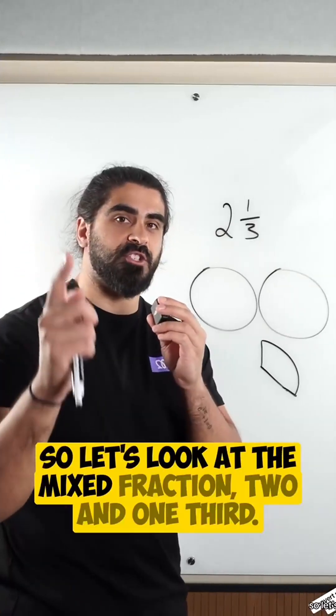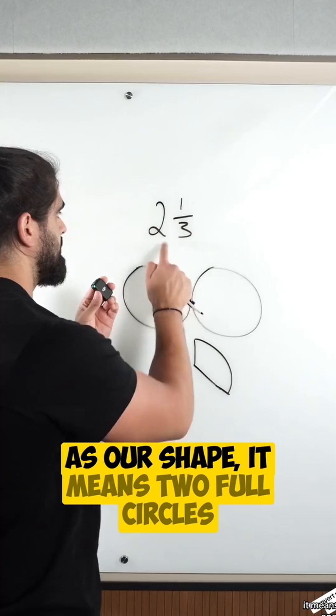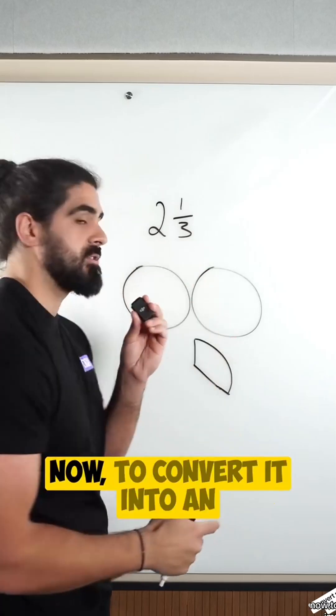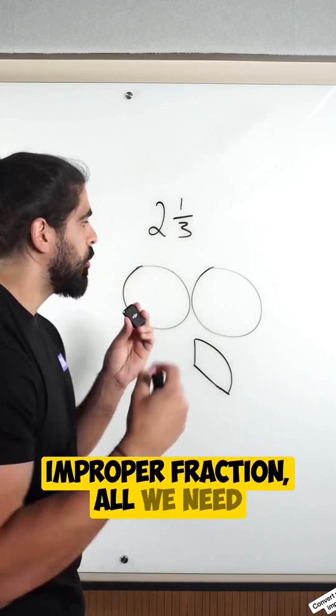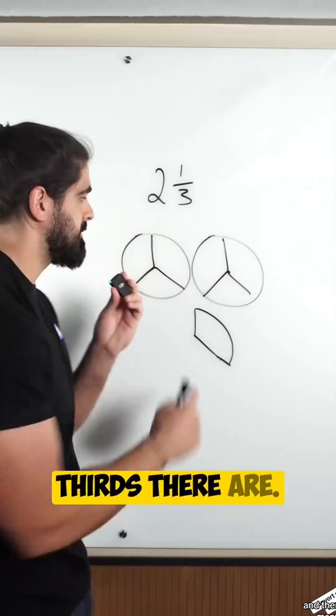So let's look at the mixed fraction 2 and 1 third. Now if we're looking at circles, for example, as our shape, it means 2 full circles and 1 third of a circle. Now to convert it into an improper fraction, all we need to do is divide up the 2 full circles into thirds. And then we just count how many thirds there are.